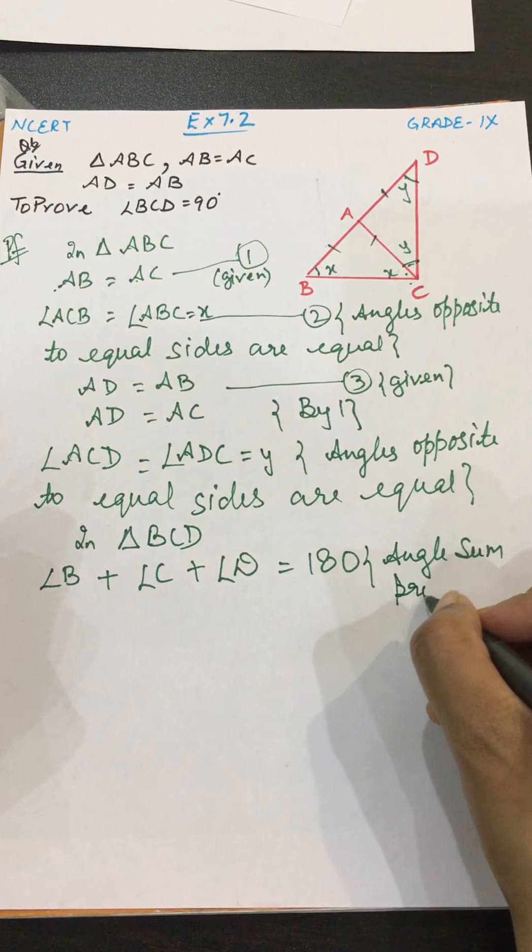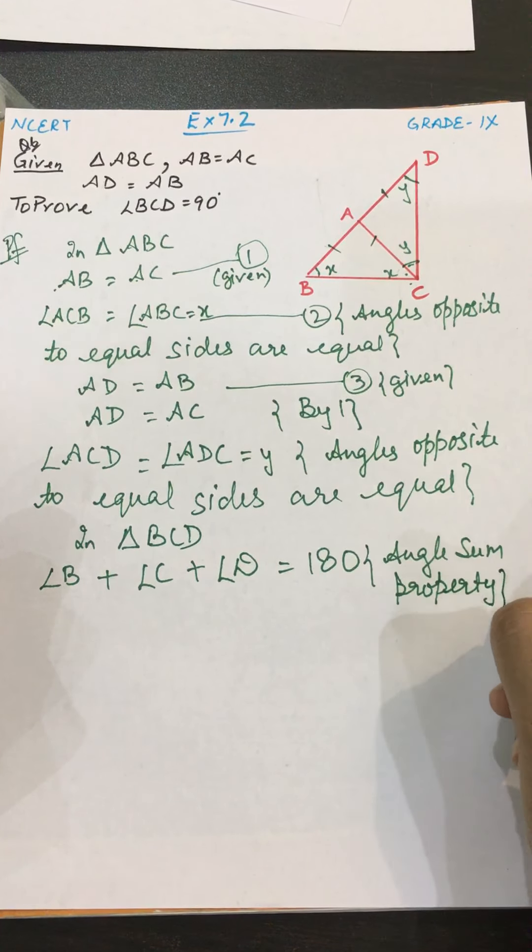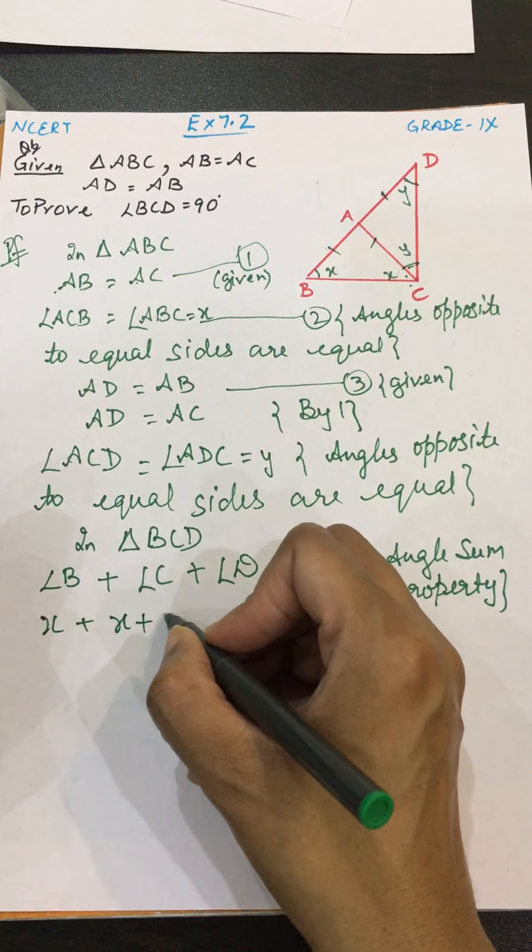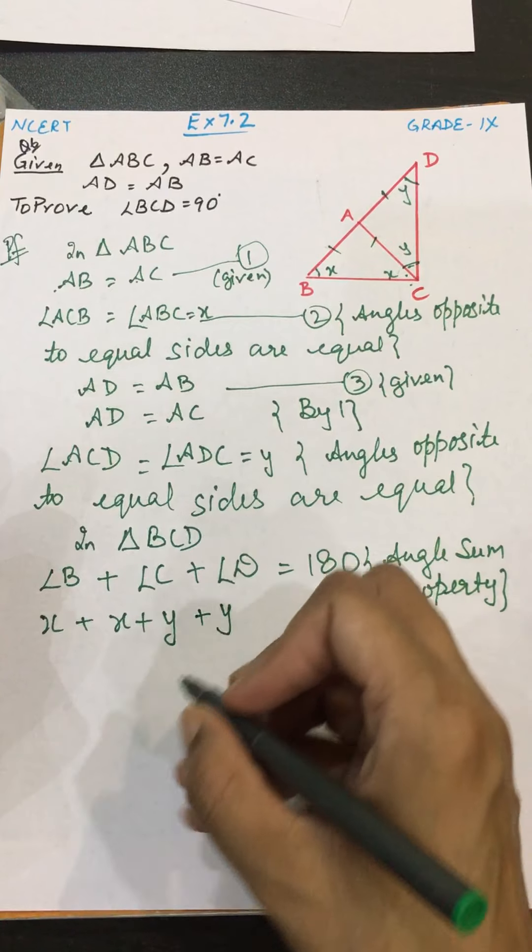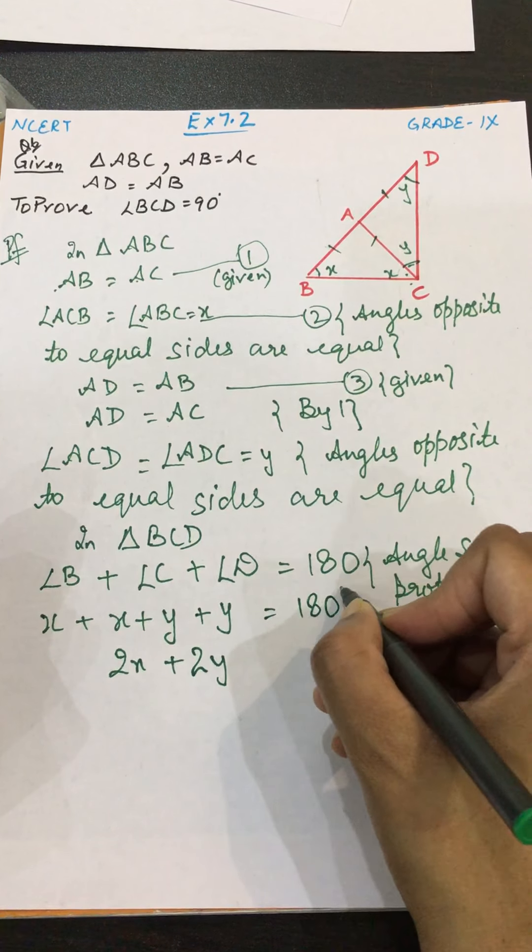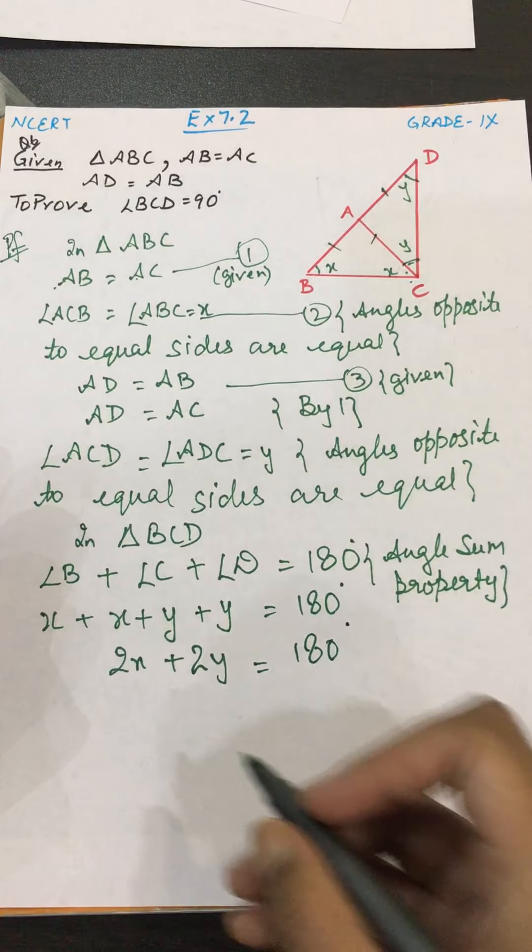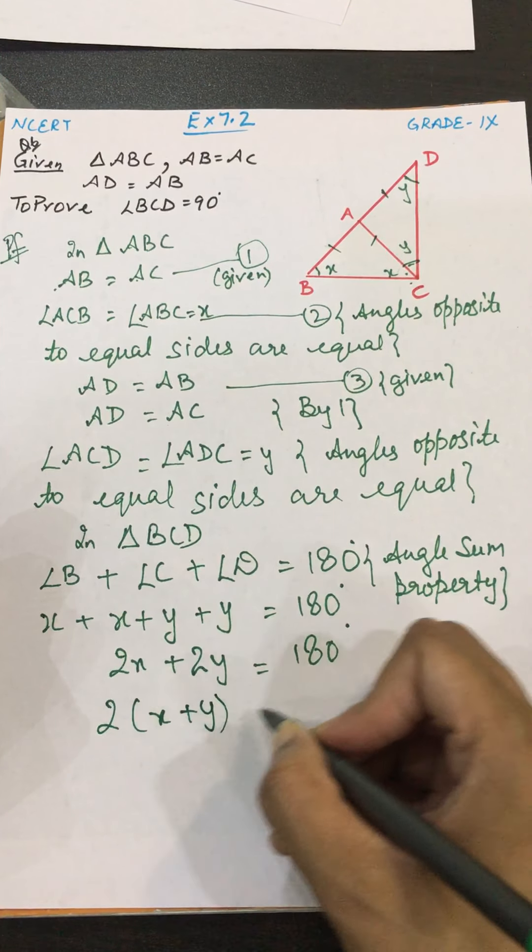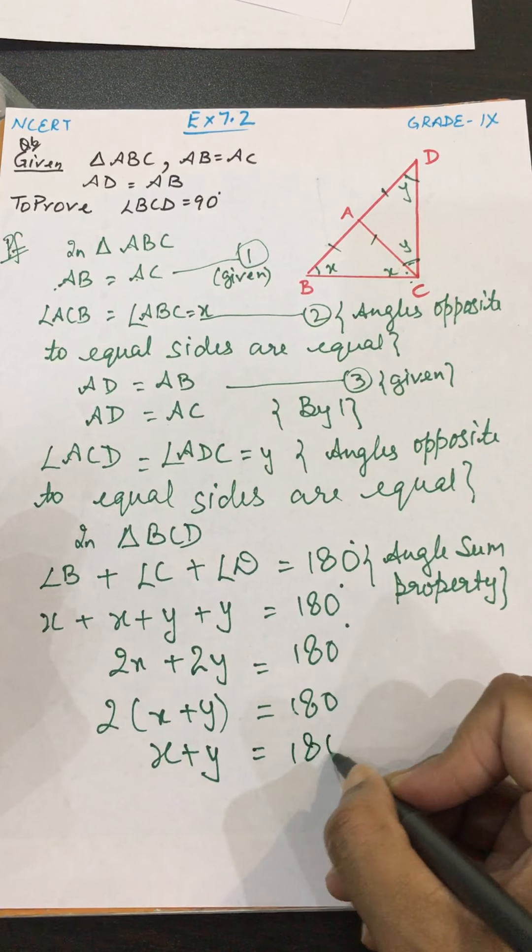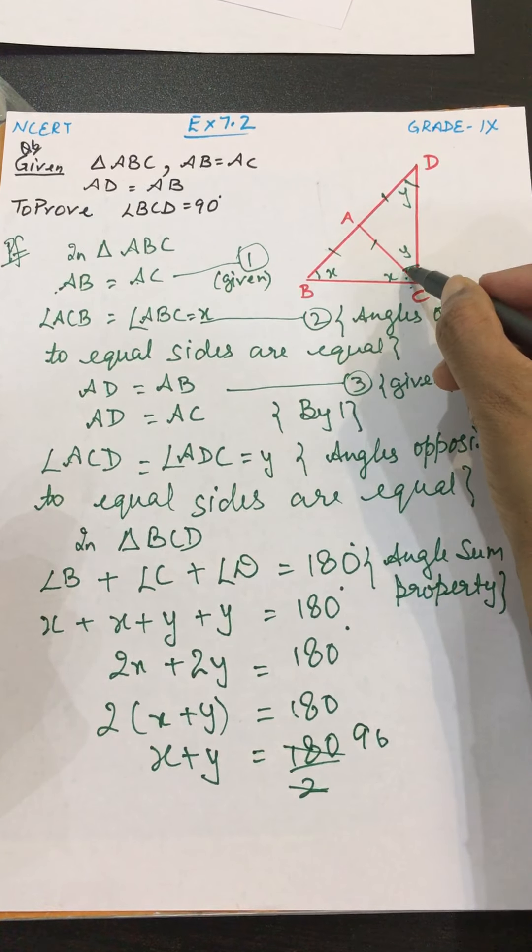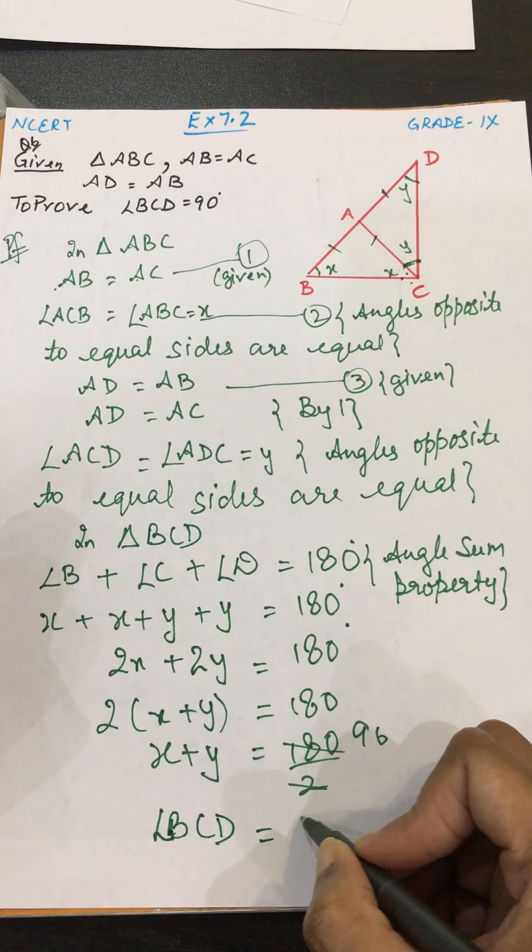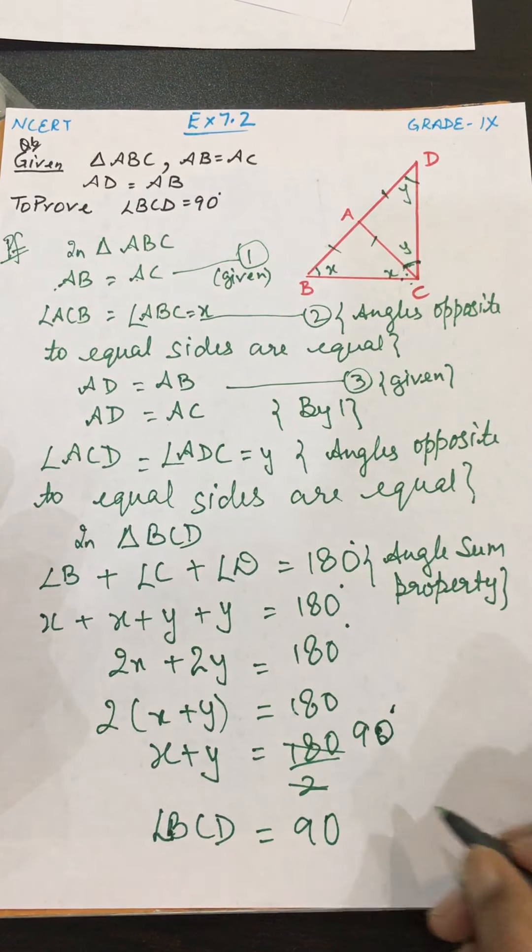Angle B is x, angle C is x plus y, D is y. So I can write x plus x plus y plus y equals 180, which is 2x plus 2y equals 180. Then take out 2 common, so x plus y equals 90. And I can see x plus y is angle BCD. Hence we have proved it is 90 degrees. Hence proved.